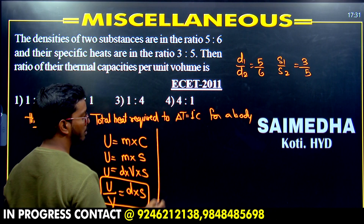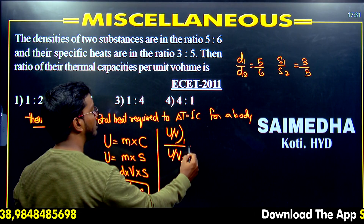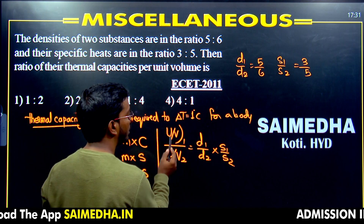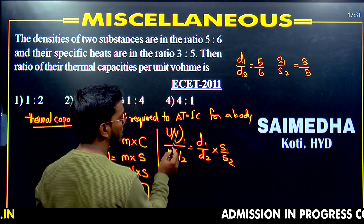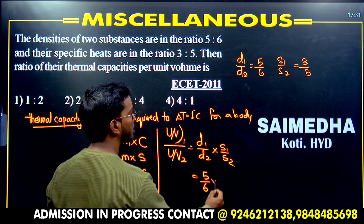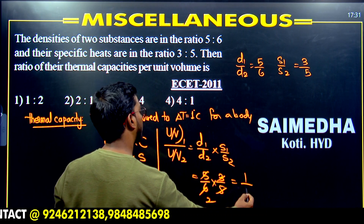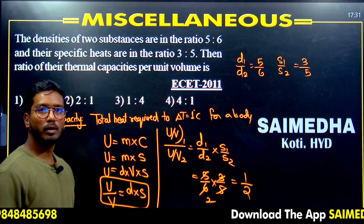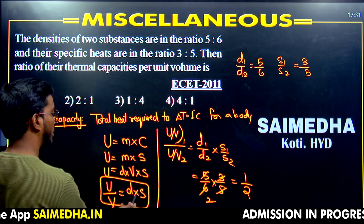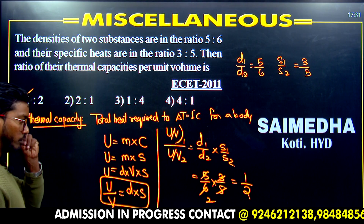The ratio (U/V)₁ divided by (U/V)₂ equals (d1/d2) × (s1/s2). Substituting: (5/6) × (3/5) — the fives cancel, giving 3/6 = 1/2. So the final answer is 1:2. Remember the formula: thermal capacity per unit volume equals density into specific heat.